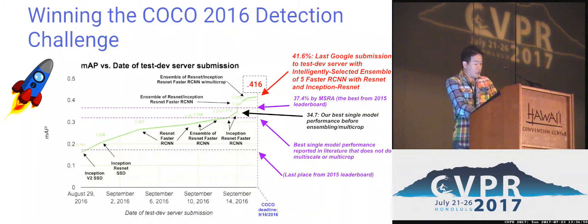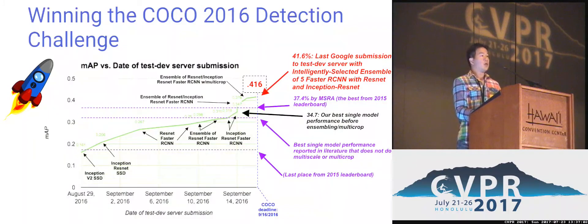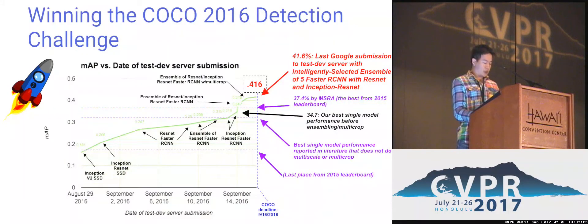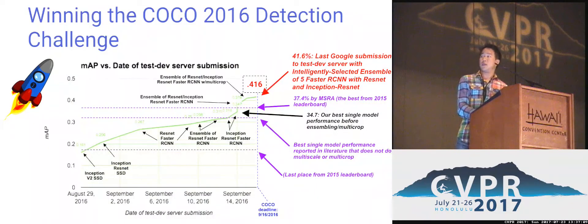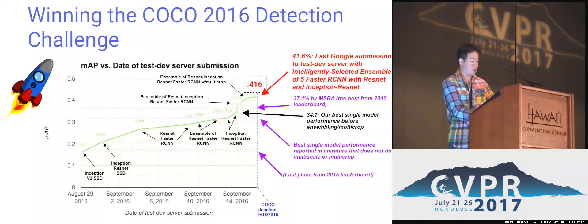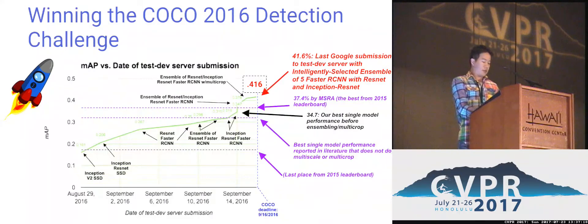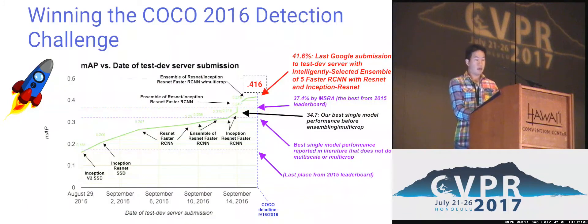Having this flexible modular code base has made it really easy for us to iterate and experiment with models. For example, we did a push late last year to achieve state-of-the-art on COCO. Over a quick two to three week span, we were able to go from a pretty weak model on COCO to quite strong performance. If you want to hear more about the details of this adventure, come see our poster. In short, we won COCO.